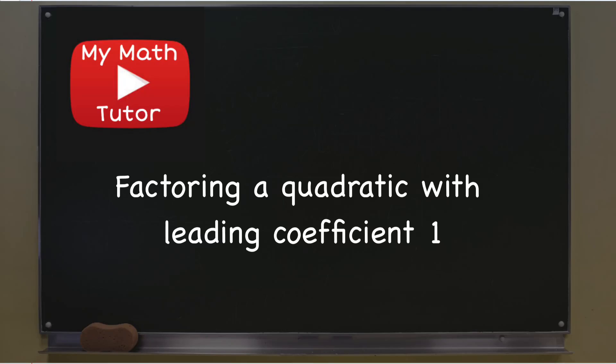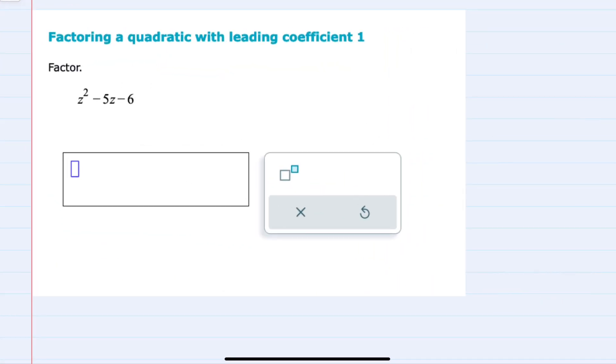In this video I'll be helping you with the Alex problem type called factoring a quadratic with leading coefficient of 1. In this example we're asked to factor z squared minus 5z minus 6.